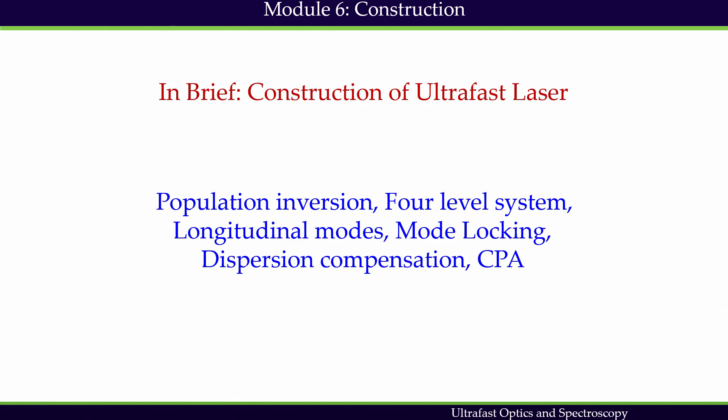With this, we have come to the end of this module. In this module we have studied the construction of ultrafast lasers. Different properties of ultrafast pulse propagation have been discussed and used to understand how to build an ultrafast laser. We have discussed population inversion, four-level systems, longitudinal modes, mode locking, dispersion compensation, and finally the scheme of Chirped Pulse Amplification. We will meet again for the next module.